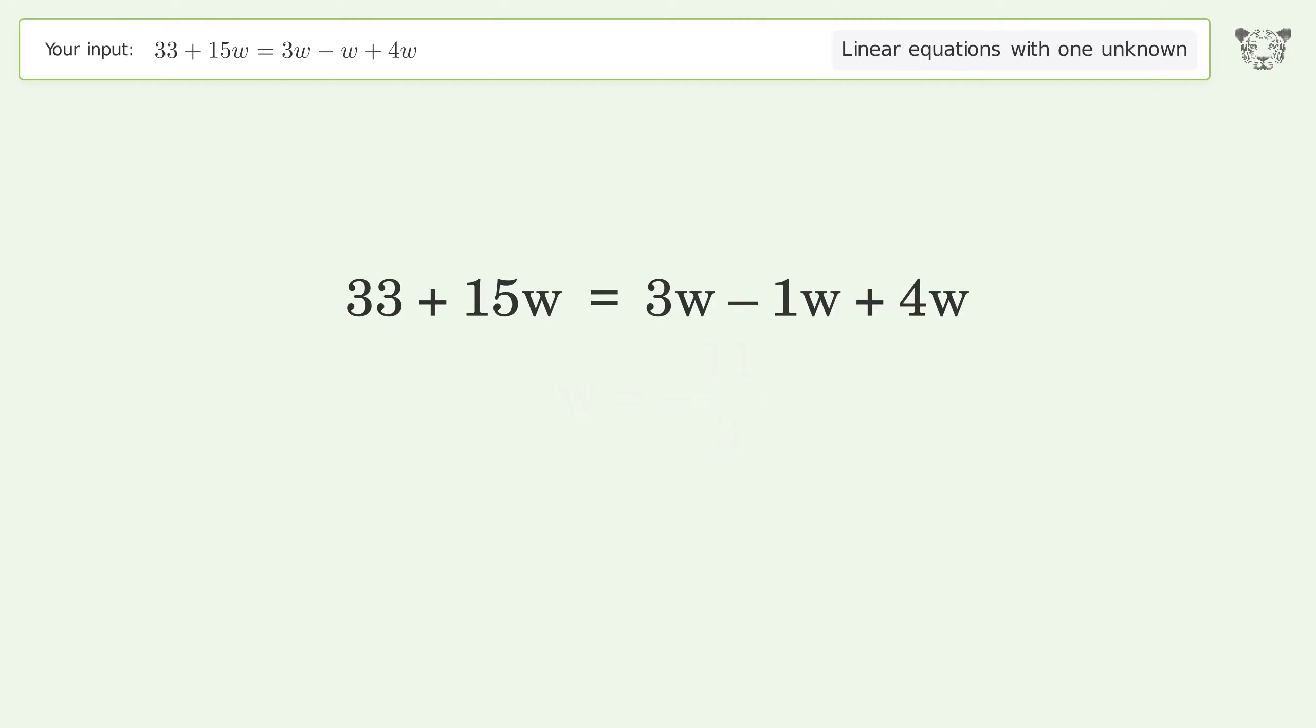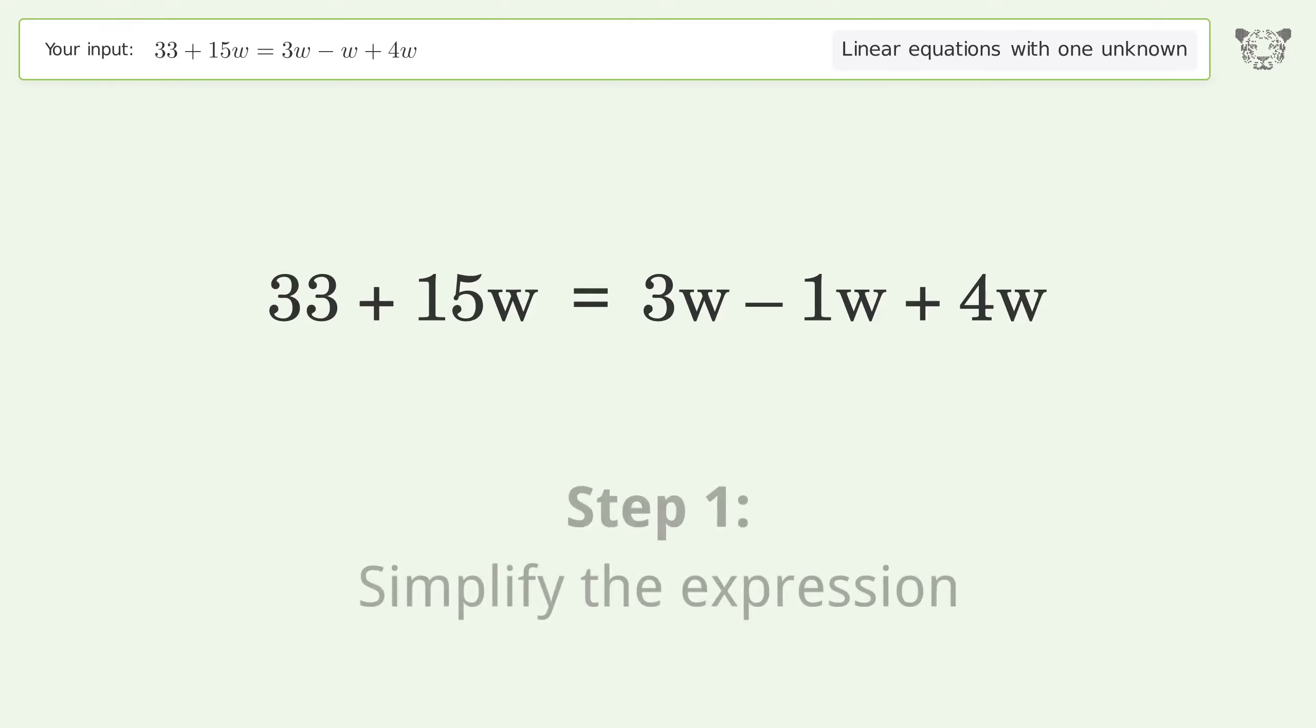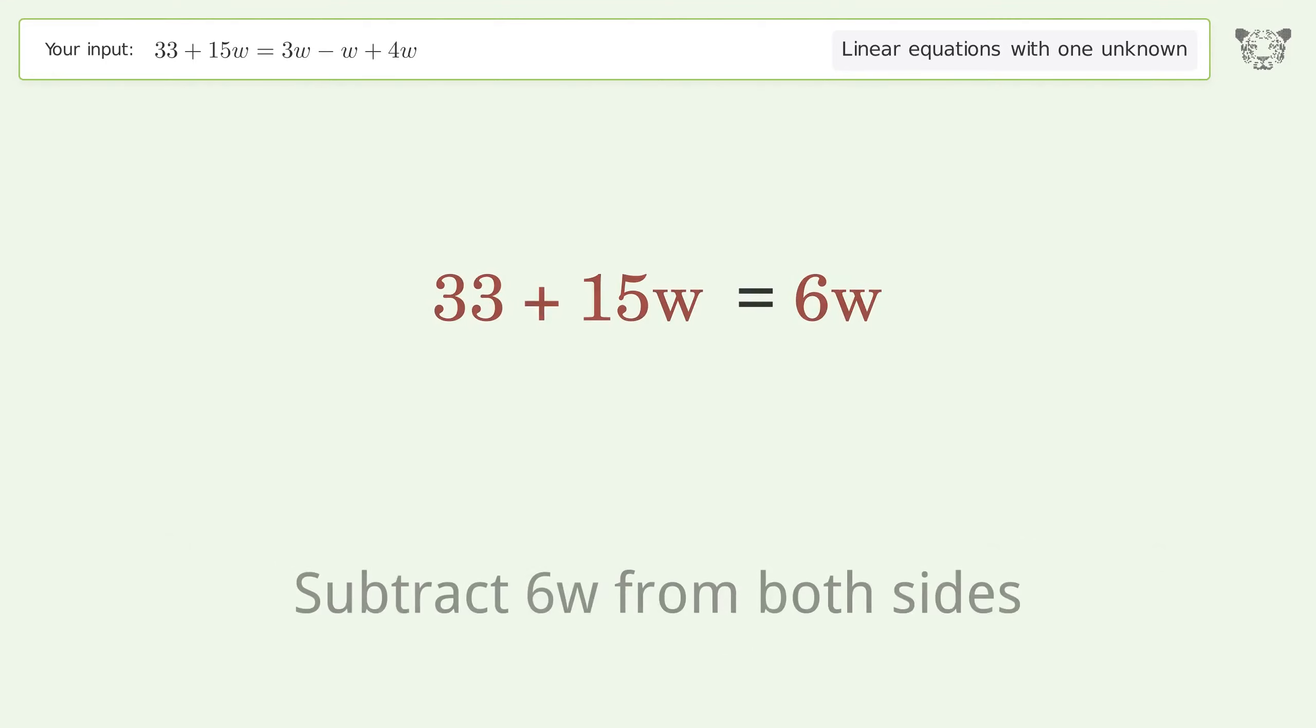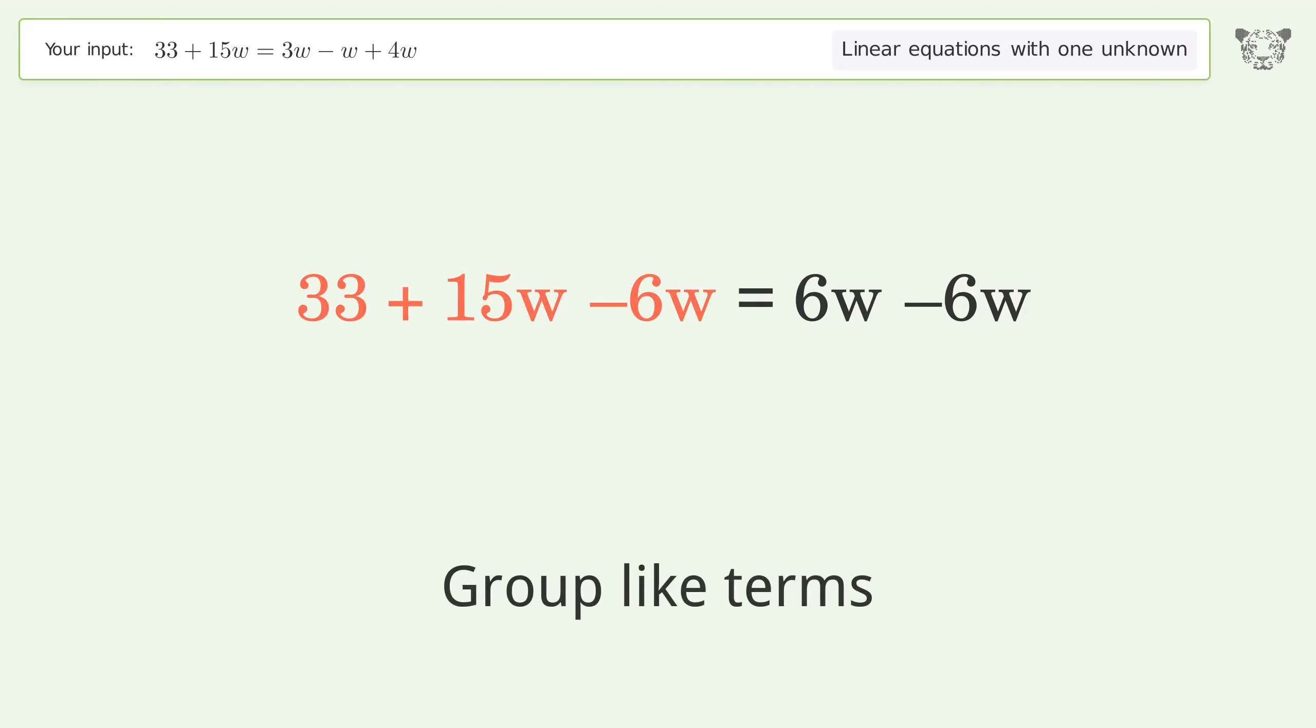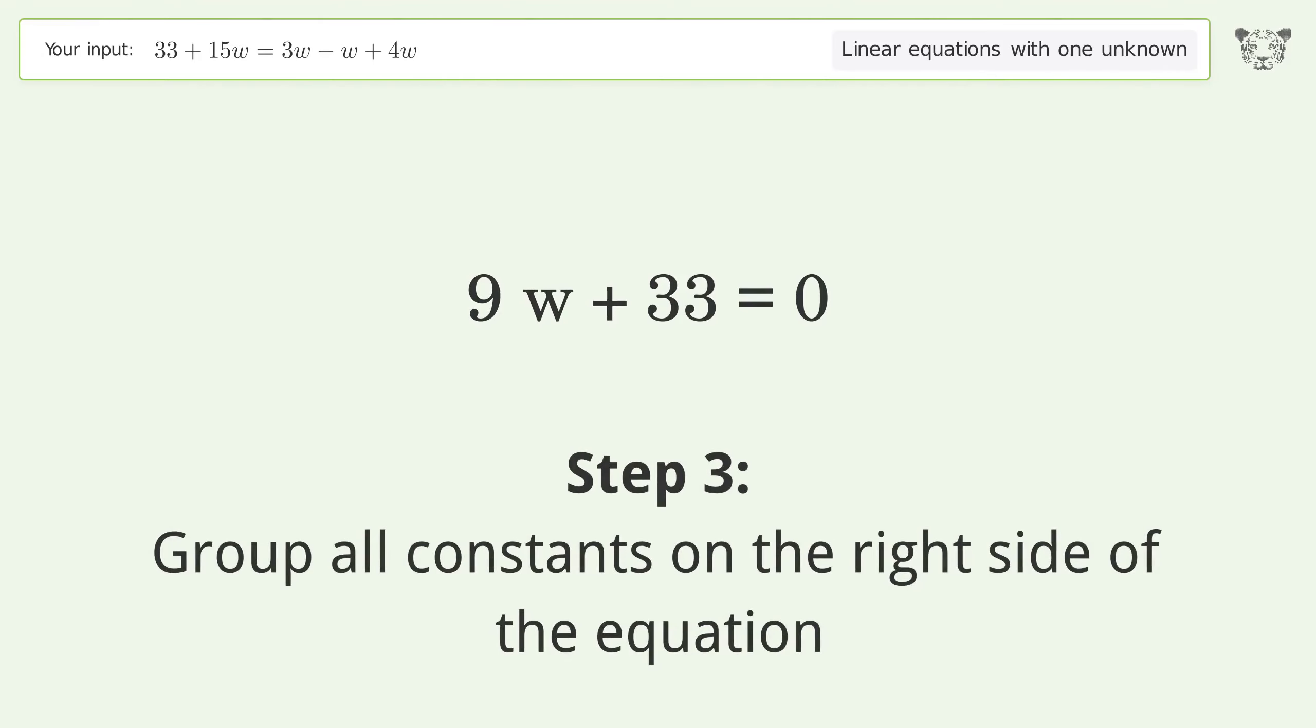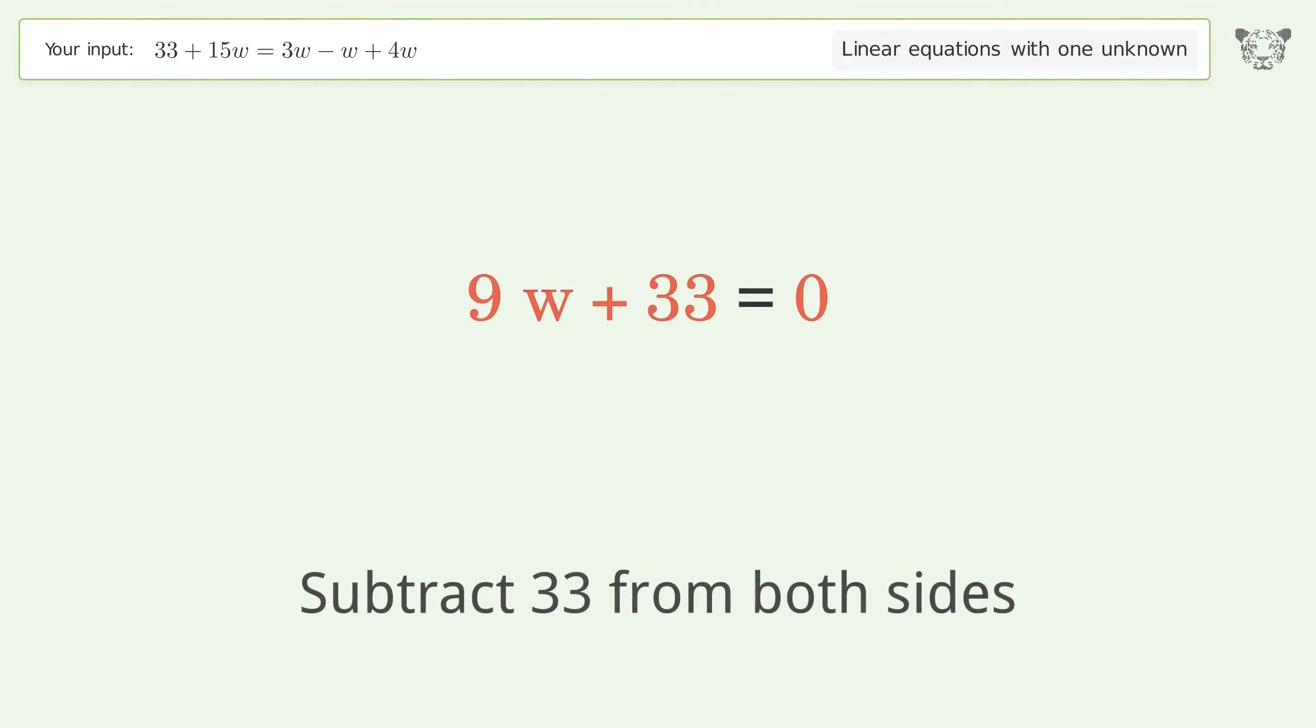Let's solve it step by step. Simplify the expression and group all w terms on the left side of the equation. Subtract 6w from both sides. Group like terms and simplify the arithmetic. Group all constants on the right side of the equation. Subtract 33 from both sides. Simplify the arithmetic.